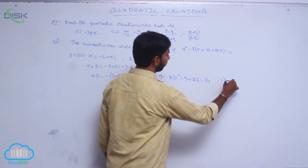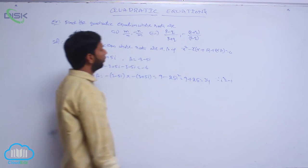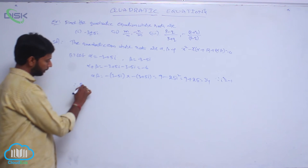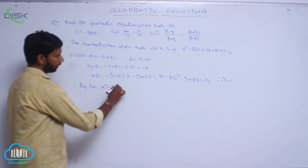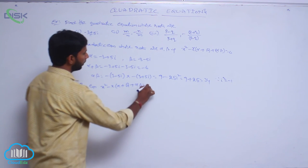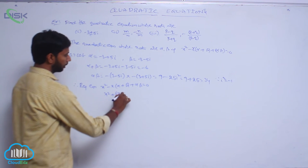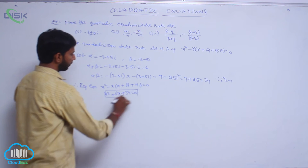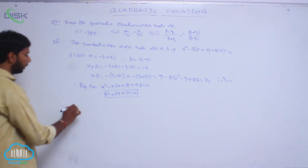Since i squared = minus 1, that gives the product of roots as 34. Therefore, the required equation is x squared minus x(alpha plus beta) plus alpha·beta = 0, that is x squared plus 6x plus 34 = 0.